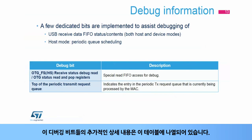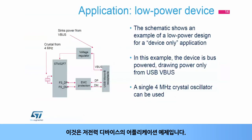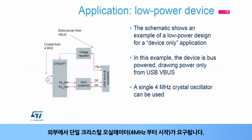Here is an application example of a low-power device. Power is drawn directly from the USB VBUS signal. A single crystal oscillator, starting from 4 MHz, is needed outside.